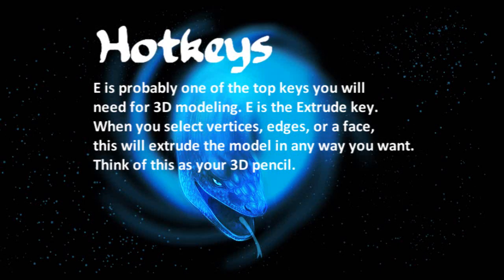E is probably one of the top keys you will need for 3D modeling. E is the extrude key. When you select vertices, edges, or a face, this will extrude the model in any way you want. Think of this as your 3D pencil.